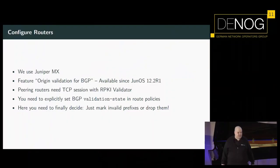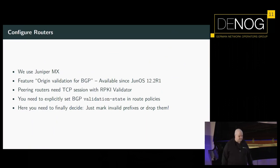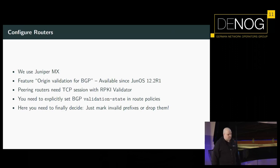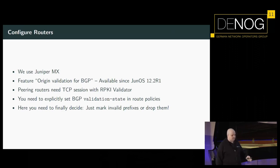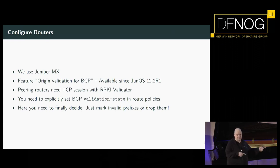The last thing you have to do is configure routers. We currently use the Juniper MX platform, which has the feature called Origin Validation for BGP — which is RPKI. That's been available since 12.2. All routers where you want to do RPKI validation need a TCP session to the validator software. On Juniper you need to explicitly set the validation state in route policies — you say if the route validator says it's invalid, then set the routing validation state to invalid. It's like you have to tell it manually to do the thing it's supposed to do.